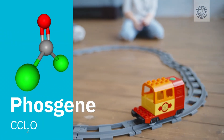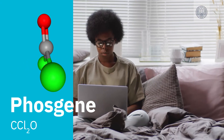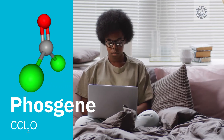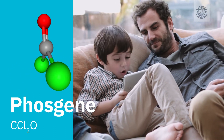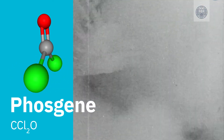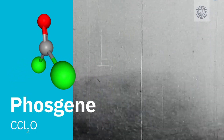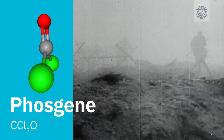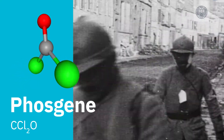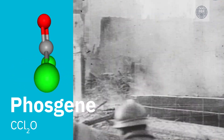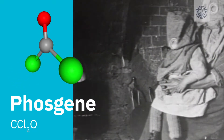Phosgene is a chemical used widely in plastics and is also used to manufacture polyurethane, a flexible foam used in furniture and mattresses. But in World War I, phosgene gas was used as a choking agent and was responsible for most of the war's chemical-related deaths. Like many chemical warfare agents, it works indiscriminately, affecting soldiers and civilians alike.